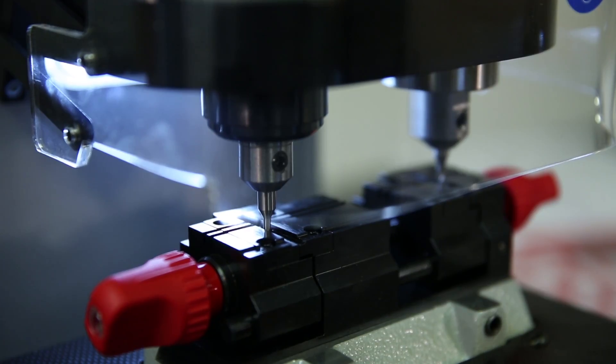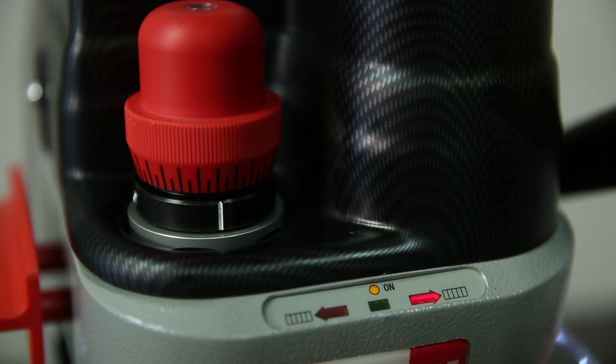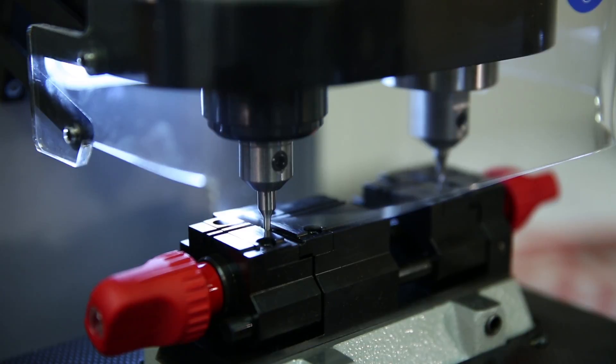At that point, back off the calibration just to the point that the red arrow is lit. This will produce a slightly shallower cut and prevent you from damaging the surface of your jaws.